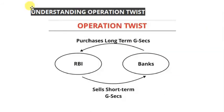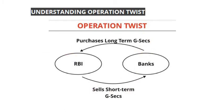Operation Twist differs from standard OMO: in Operation Twist, RBI simultaneously sells short-term G-Secs to banks and purchases long-term G-Secs. This simultaneous buying and selling distinguishes it from a regular OMO, which is why it is called a 'special' open market operation. By purchasing long-term G-Secs, RBI indirectly creates demand for them.